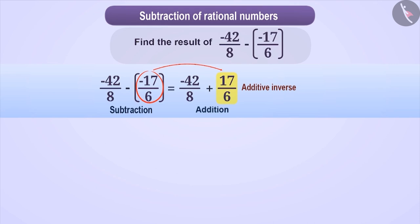Here, the additive inverse of -17/6 is 17/6 which is what we will write in the second place. That is, -42/8 - (-17/6) is equal to -42/8 + 17/6.